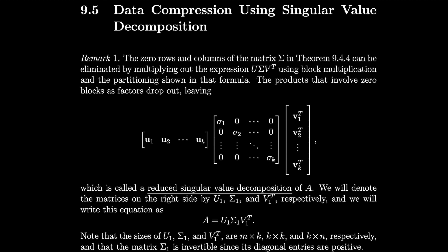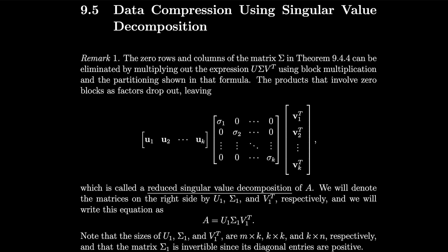Section 9.5: Data compression using singular value decomposition. The zero rows and columns of the matrix sigma in theorem 9.4.4 can be eliminated by multiplying out the expression U Σ Vᵀ using block multiplication and the partitioning shown in that formula. The products that involve zero blocks as factors drop out, leaving a form which is called a reduced singular value decomposition of the matrix A.